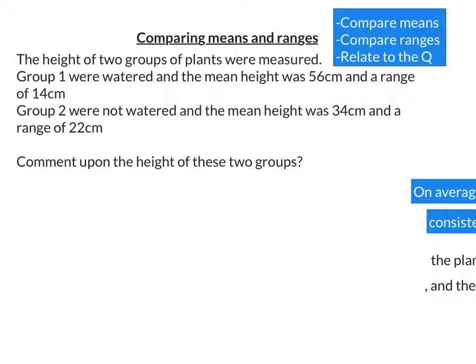Here's a second question about two groups of plants. Now, we have their means and ranges, so let's compare them. So the mean of the first group was higher than the mean of the second group, and the range of group one is lower than the range of group two.